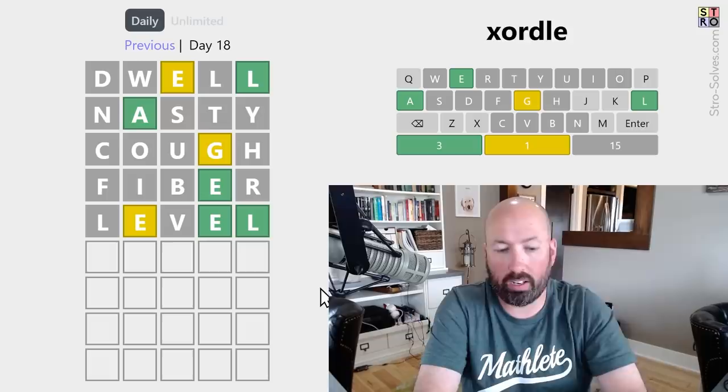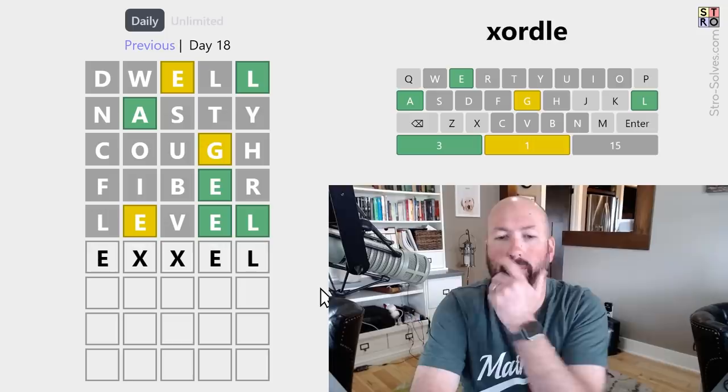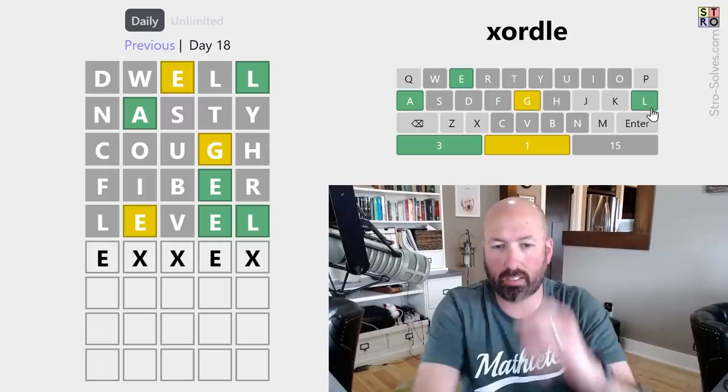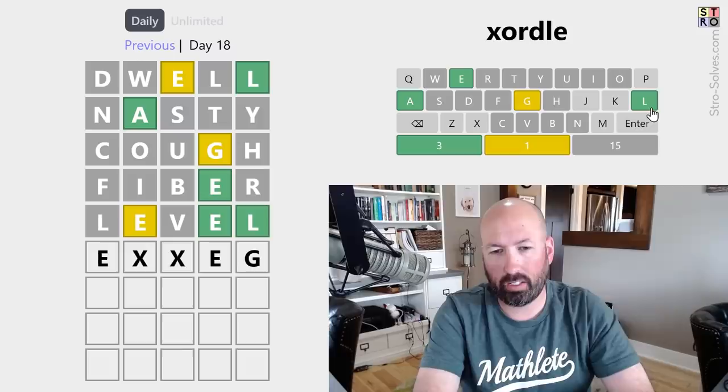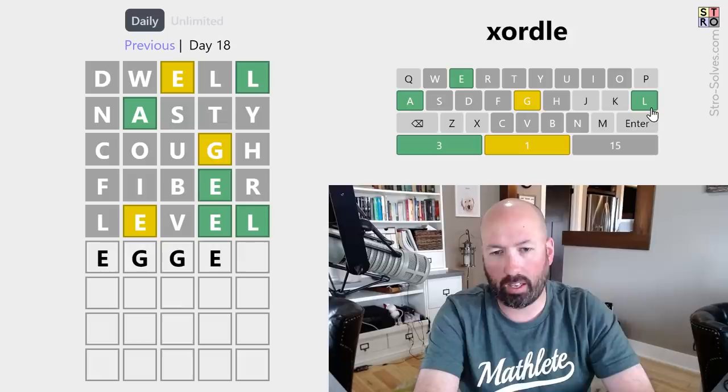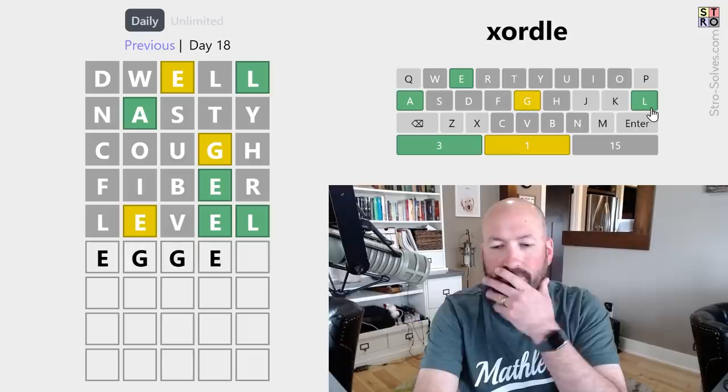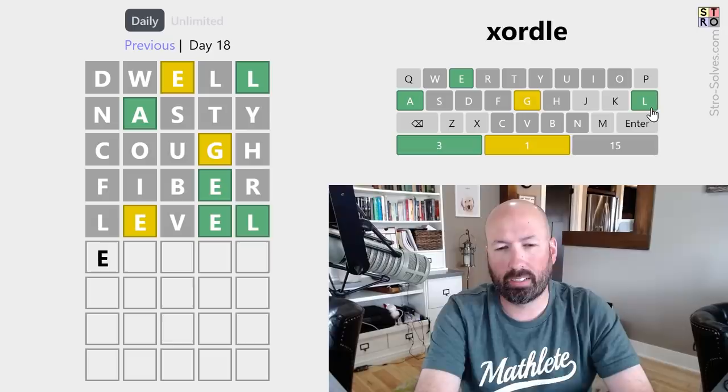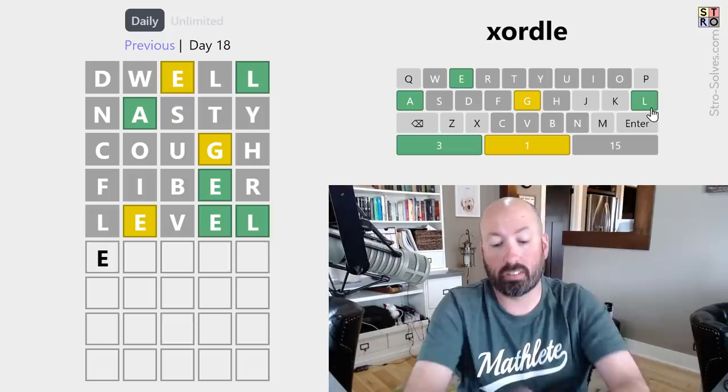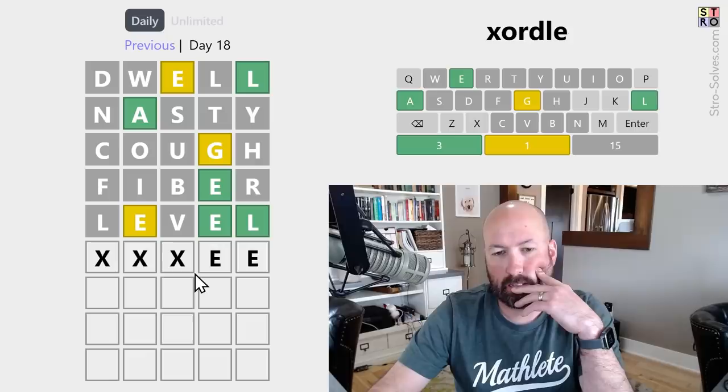So, and it's got to be at the beginning. E something something E. Excel? No, we don't have a C. Now, the L isn't necessarily in that word. It could be something else. But, we could use the G. EG, maybe? Eager? Egged? No, we don't have an R or a D.